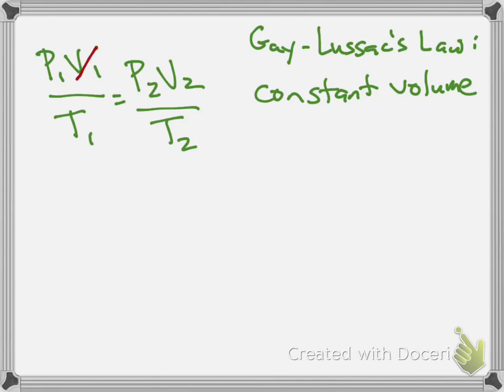And if we have constant volume, that means that if the volume doesn't change, we can cancel it out on both sides, and we're left with P1 over T1 equals P2 over T2, which is the equation for Gay-Lussac's Law.